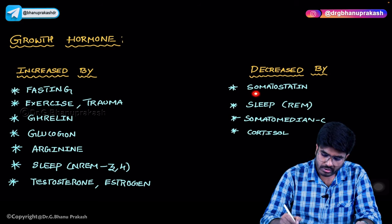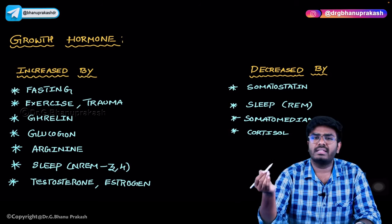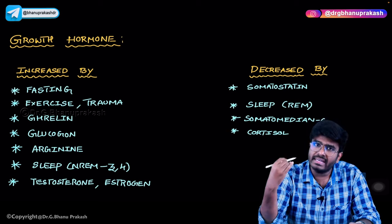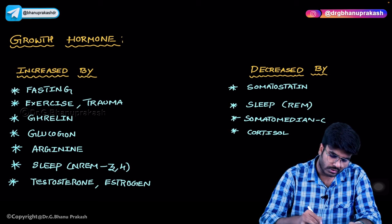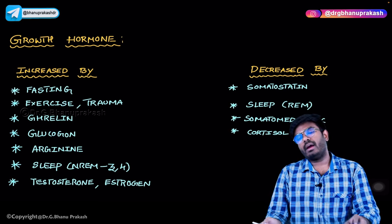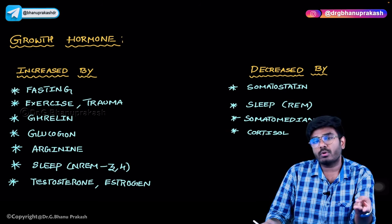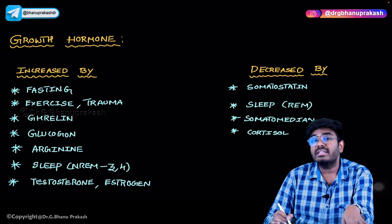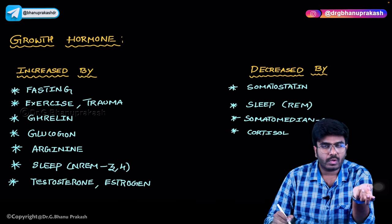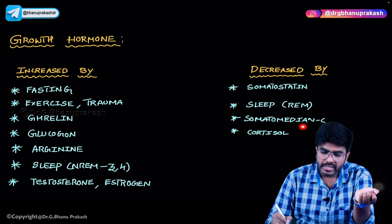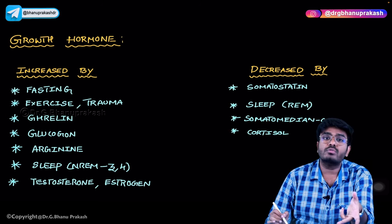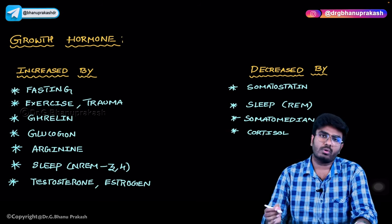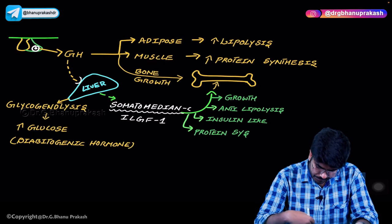Now, what decreases growth hormone levels? Somatostatin, from the hypothalamus — also called growth hormone inhibiting hormone — universally decreases everything: growth hormone, glucagon, insulin, and gastric acid production. During REM sleep, growth hormone levels are decreased (whereas prolactin increases during REM). Somatomedin C provides negative feedback to decrease growth hormone, and cortisol also decreases growth hormone levels.